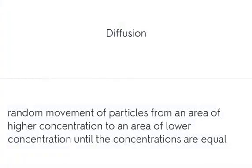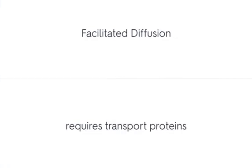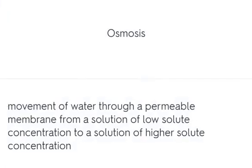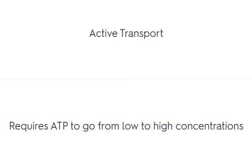Diffusion is the random movement of particles from an area of higher concentration to an area of lower concentration until the concentrations are equal. Facilitated diffusion requires transport proteins. Osmosis is the movement of water through a permeable membrane from a solution of low solute concentration to a solution of higher solute concentration. Active transport requires ATP to move substances from low to high concentrations.